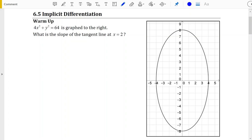4x squared plus y squared equals 64 is what is known as an implicit equation, and it is implicit because it is written in terms of both variables, both x and y. Of course the variables can be any two variables, but both independent and dependent variables, both x and y.